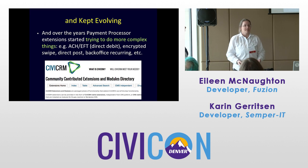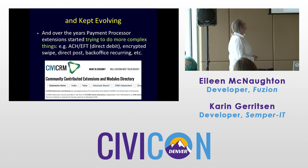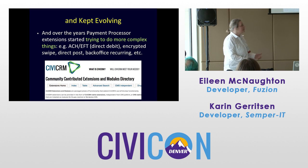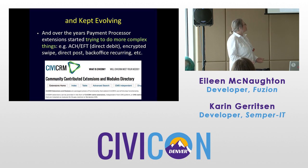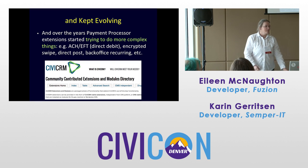They kept evolving. As the framework firmed up around 4.2, lots of payment processors had been written. Over the years, payment processor extensions started doing more complex things: ACH/EFT, a form of direct debit, encrypted swipe, direct post, back-office recurring. A lot of more complicated things were coming, because organizations were looking to use their payment processors and this is what those processors say they can do.